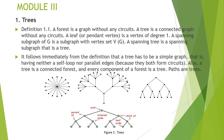First is the definition of trees. A tree is a connected graph without any circuits. A forest is a collection of trees. A pendant vertex, also known as a leaf, is a vertex of degree 1. A spanning subgraph is a subgraph with the vertex set V of G. A spanning tree is a spanning subgraph that is a tree. From the definition, a tree has to be a simple graph.